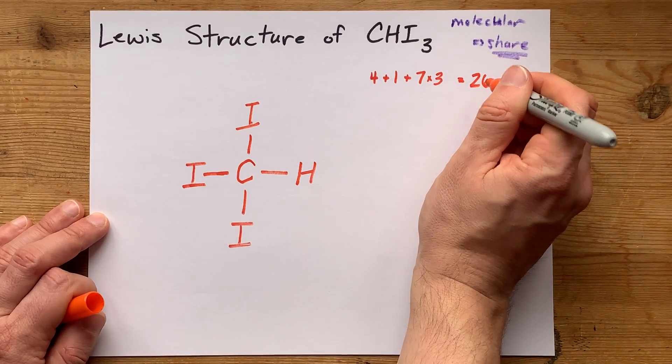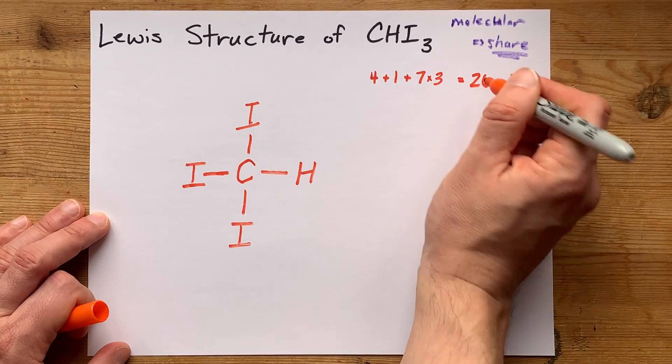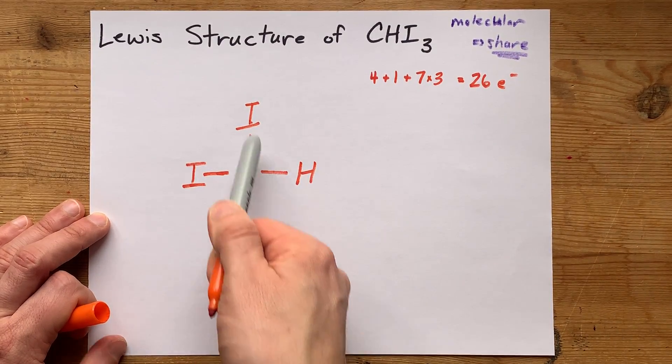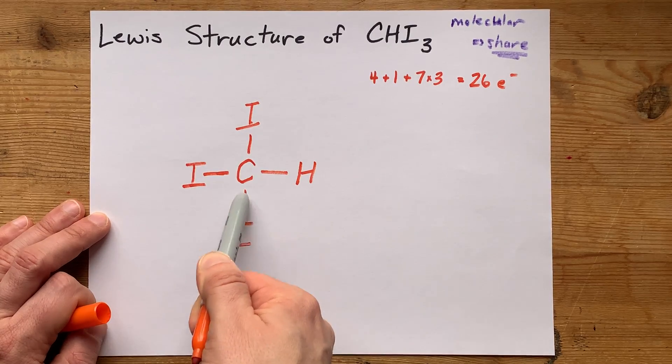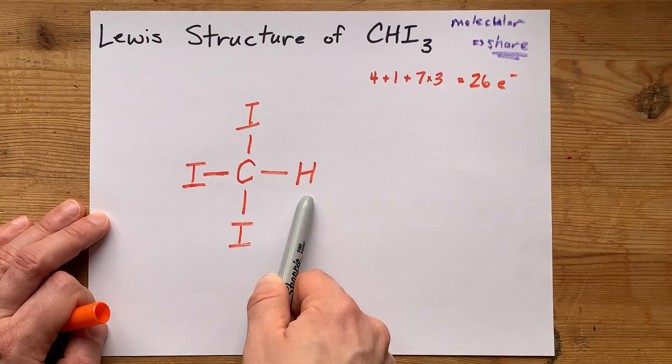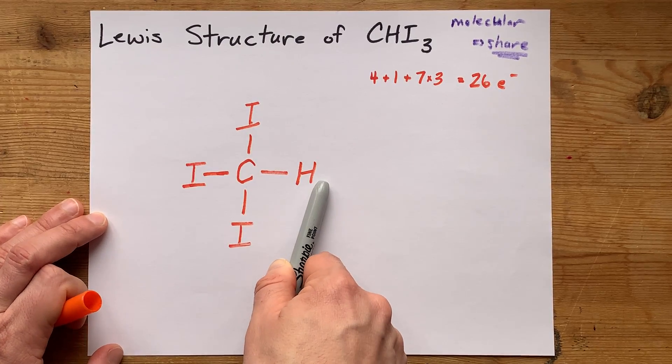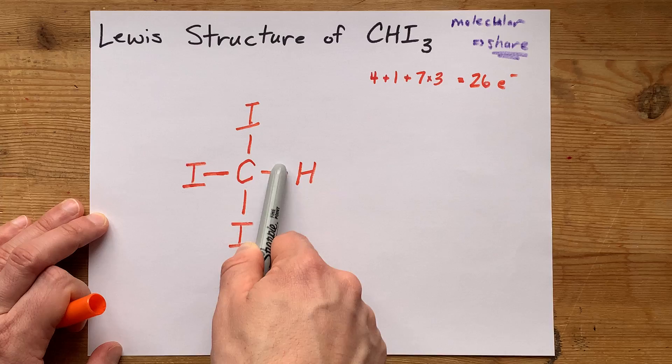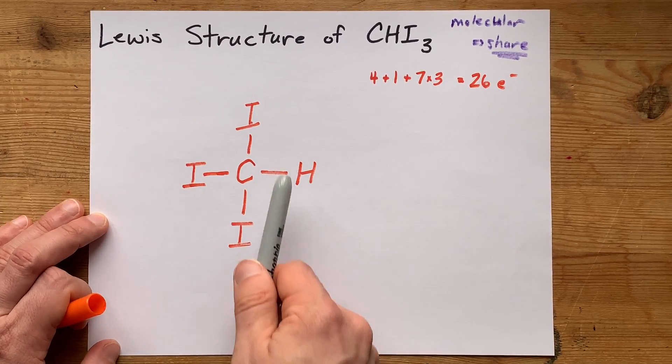I need 26 electrons total. Now, this carbon already has a complete octet, 2, 4, 6, 8 electrons around it. And hydrogen doesn't want a full octet. It's one of those exceptions. It's happy with just these two electrons here. So, 2, 4, 6, 8. I'm going to count up to 26, and I'm going to complete the octets on the iodines.